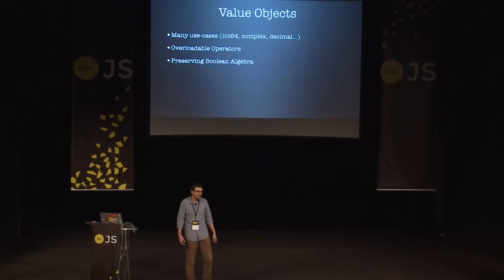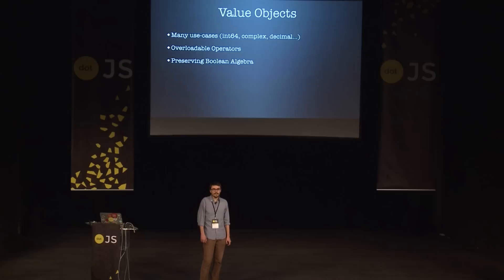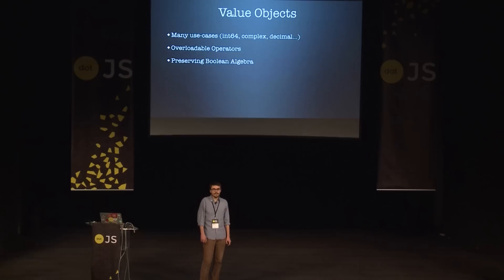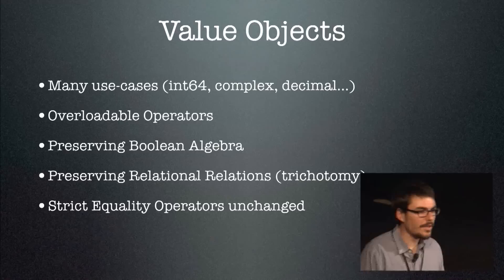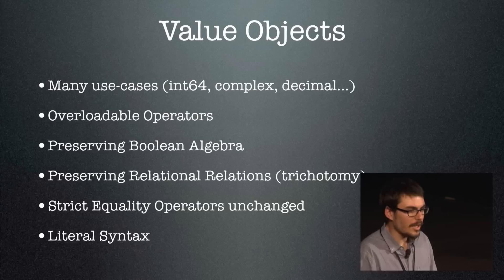The goals include preserving Boolean algebra so these types behave intuitively with Boolean operators, preserving relational trichotomy — basically, if A is larger than B, don't have A also be less than or equal to B. Have strict equality (triple equals) behave as usual, and have a literal syntax to extend the language in a more seamless way.